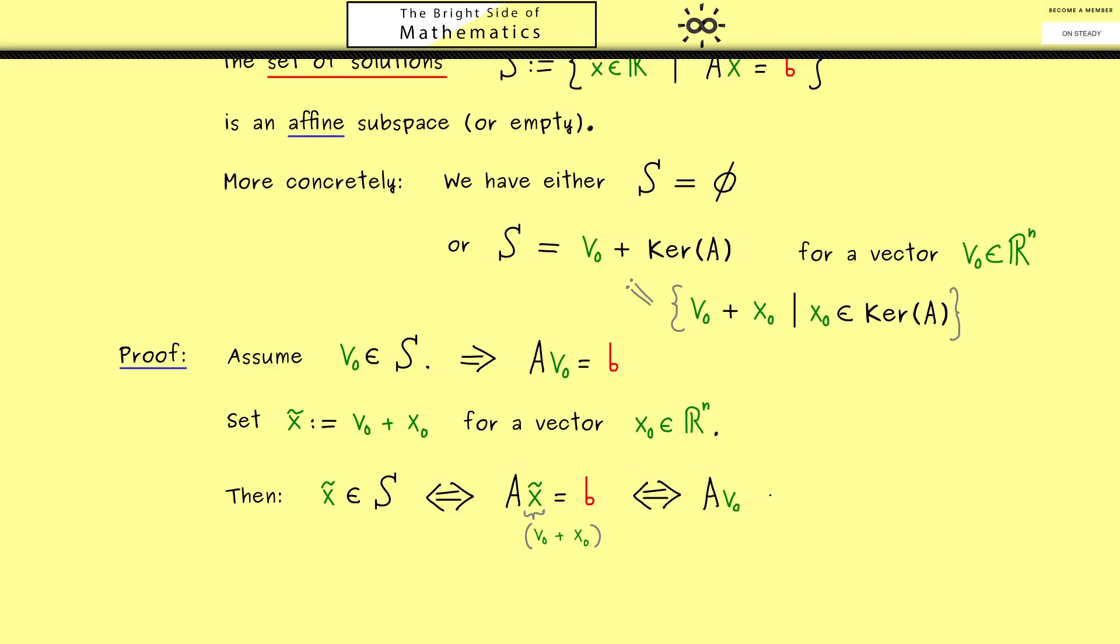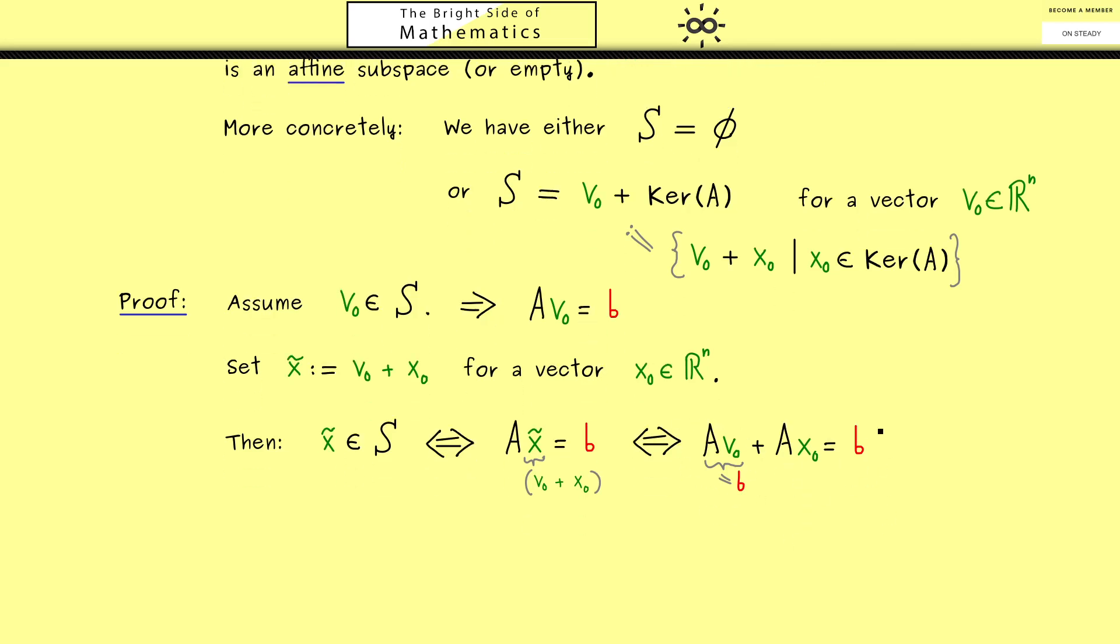On the left hand side we then have A times v_0 plus A times x_0, and of course the right hand side we don't change at all. Now at this point we can use what we know, namely that A times v_0 is equal to b. Hence there is also the vector b on the left hand side. Therefore in the next step we can simply subtract it on both sides.